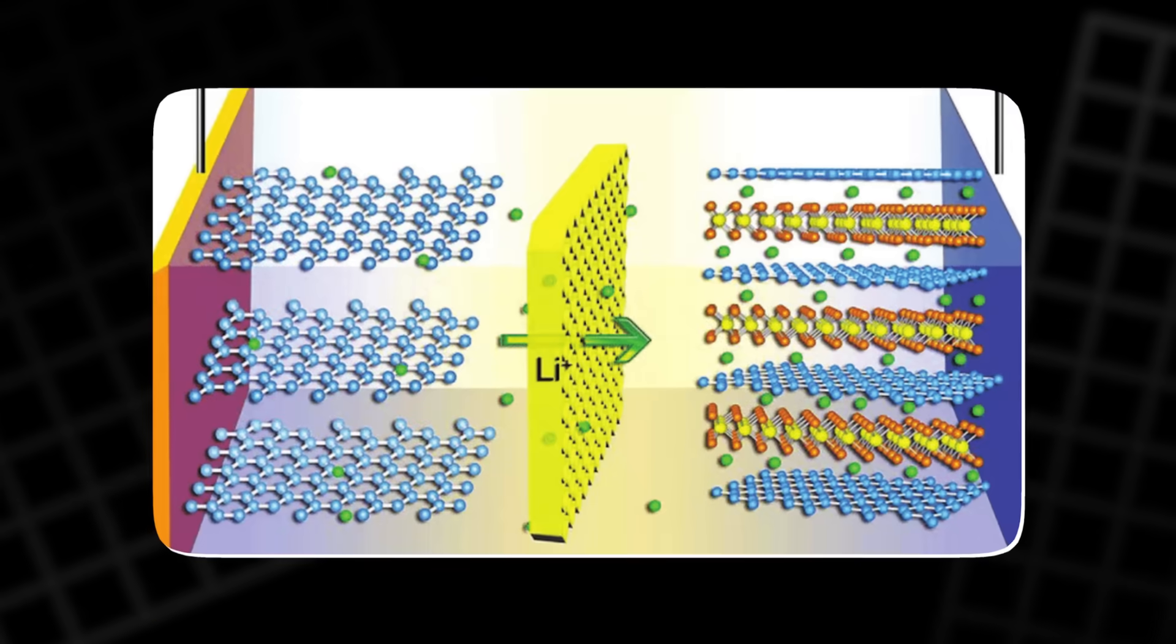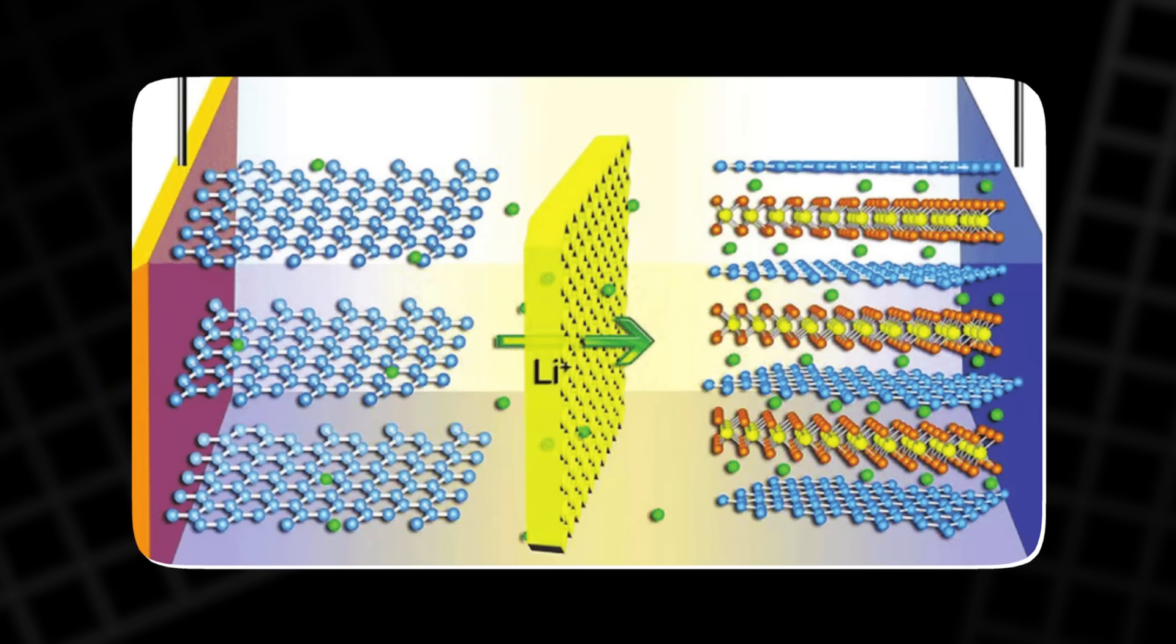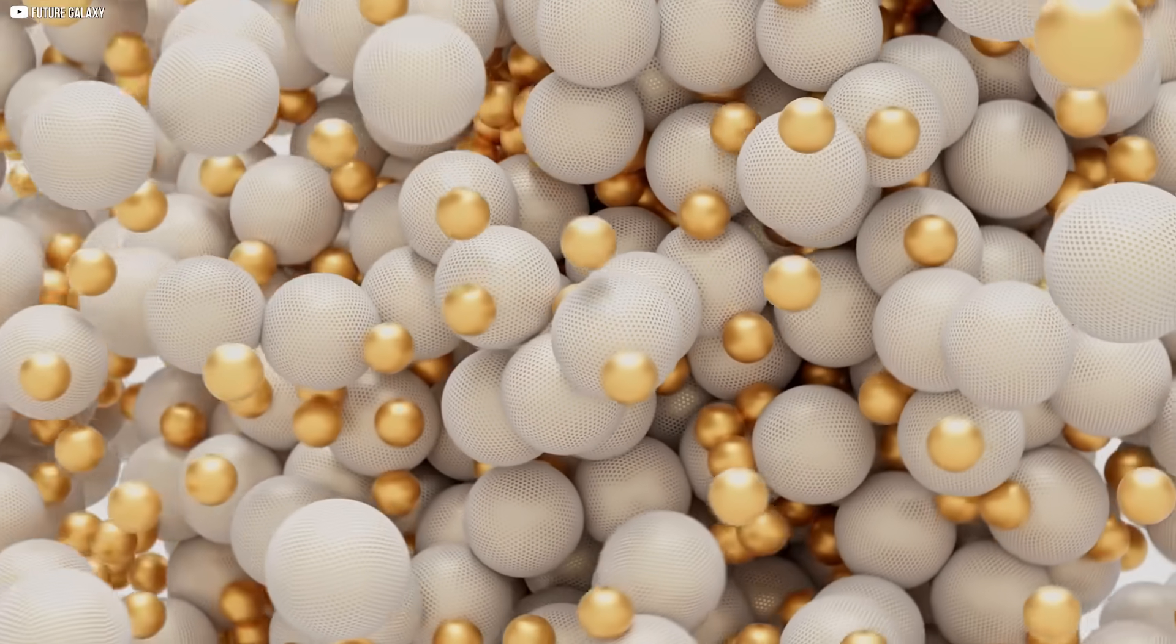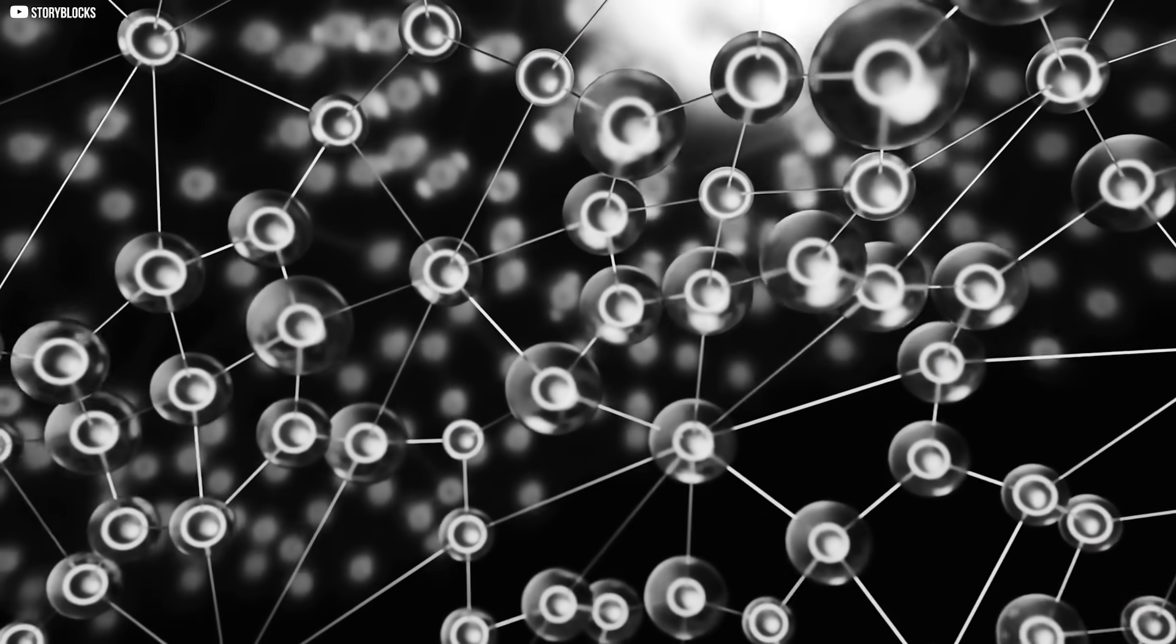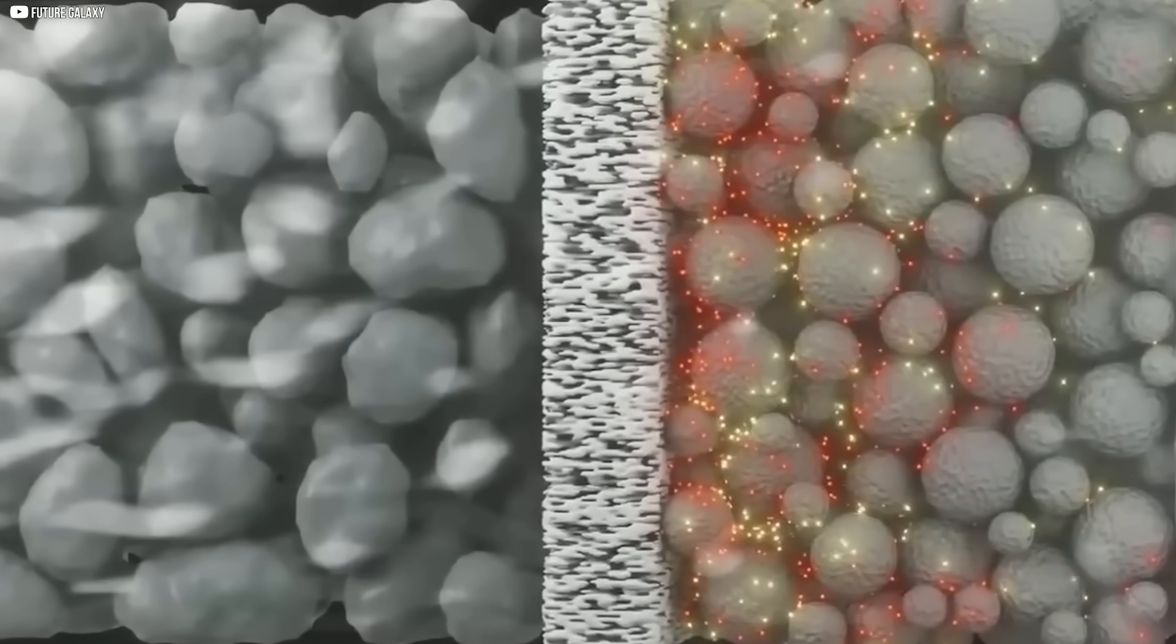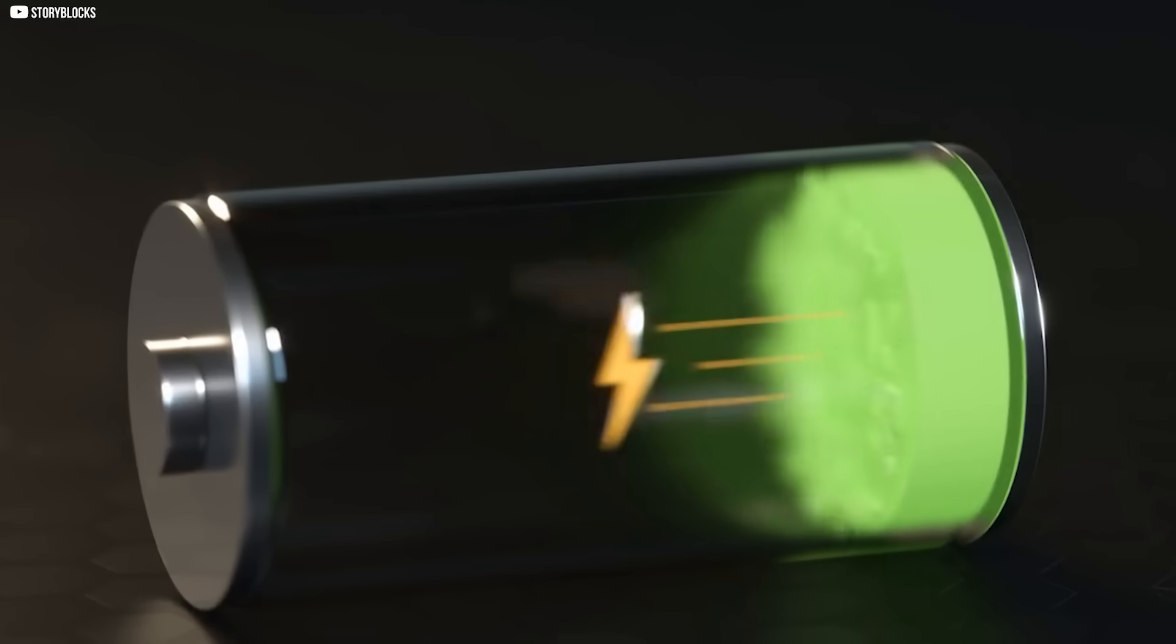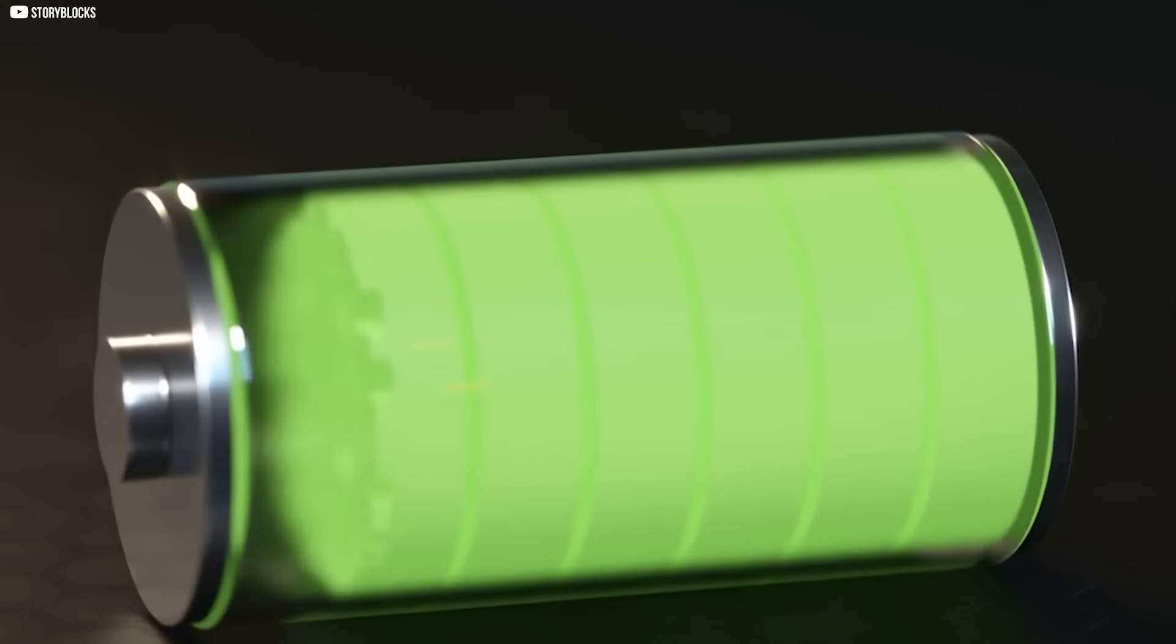First, it acts as a support structure, wrapping around the silicon oxide and holding it steady. When the silicon expands during charging, graphene keeps it from shattering. It absorbs the stress, bends without breaking. Second, it acts like a highway for electrons. Electricity moves across its surface effortlessly. There's no slowdown, no resistance, no loss. That means faster charging, more efficient power delivery, less heat.